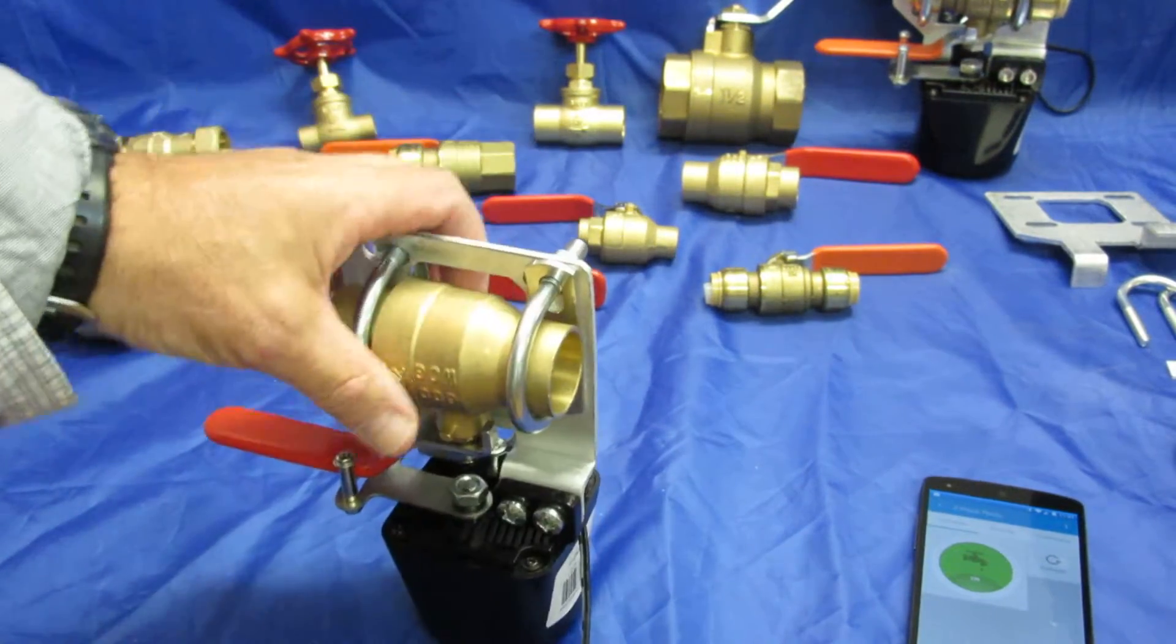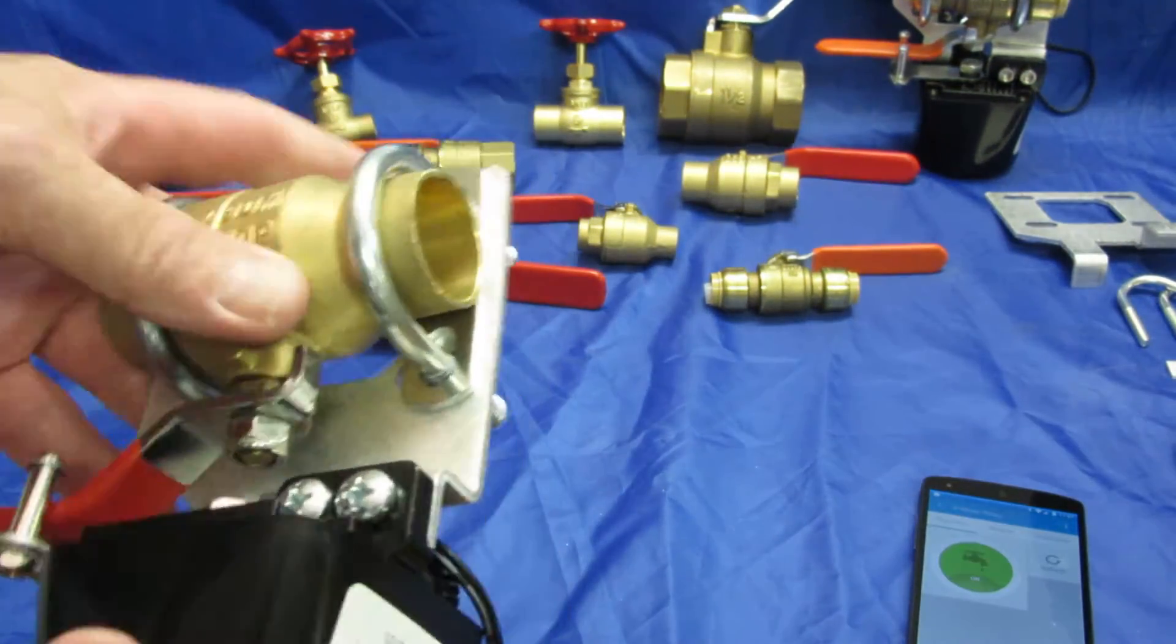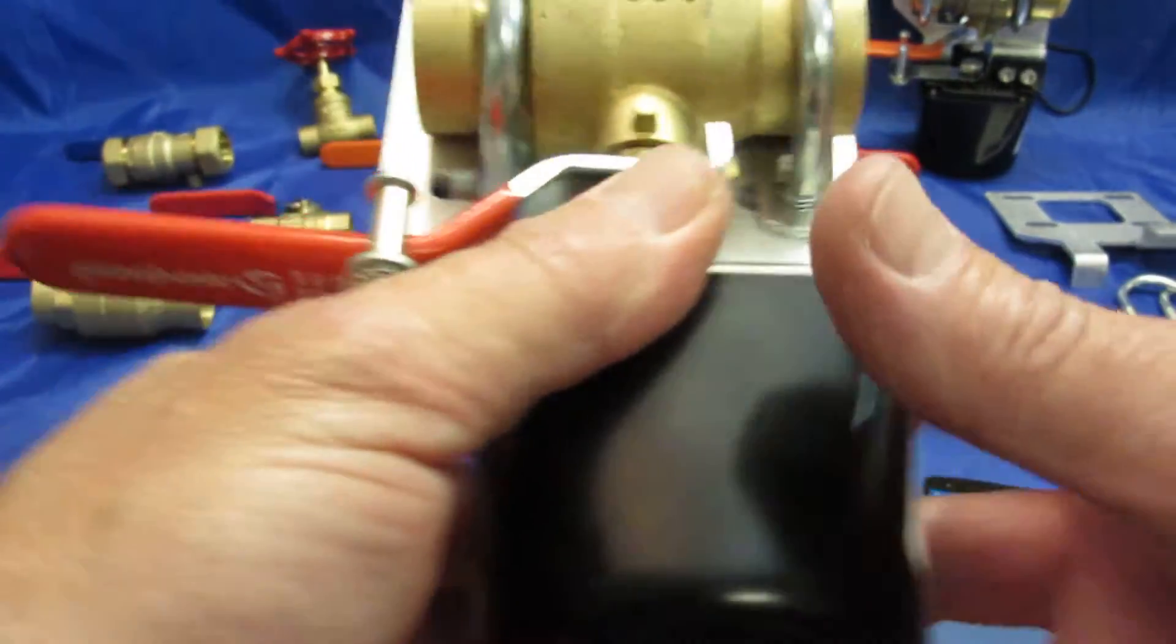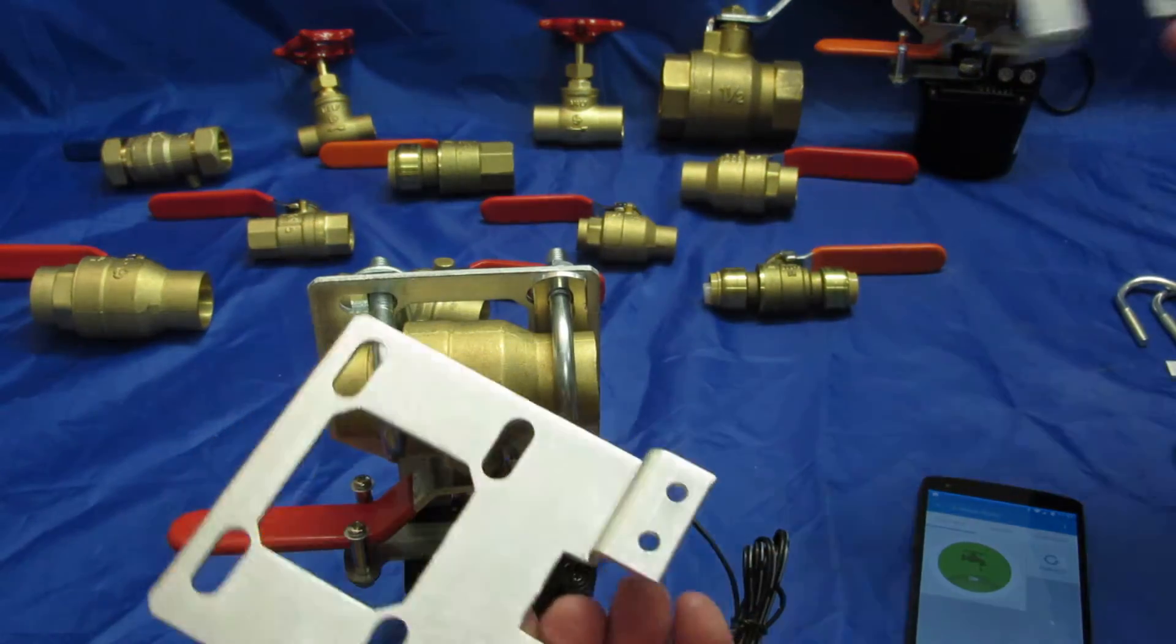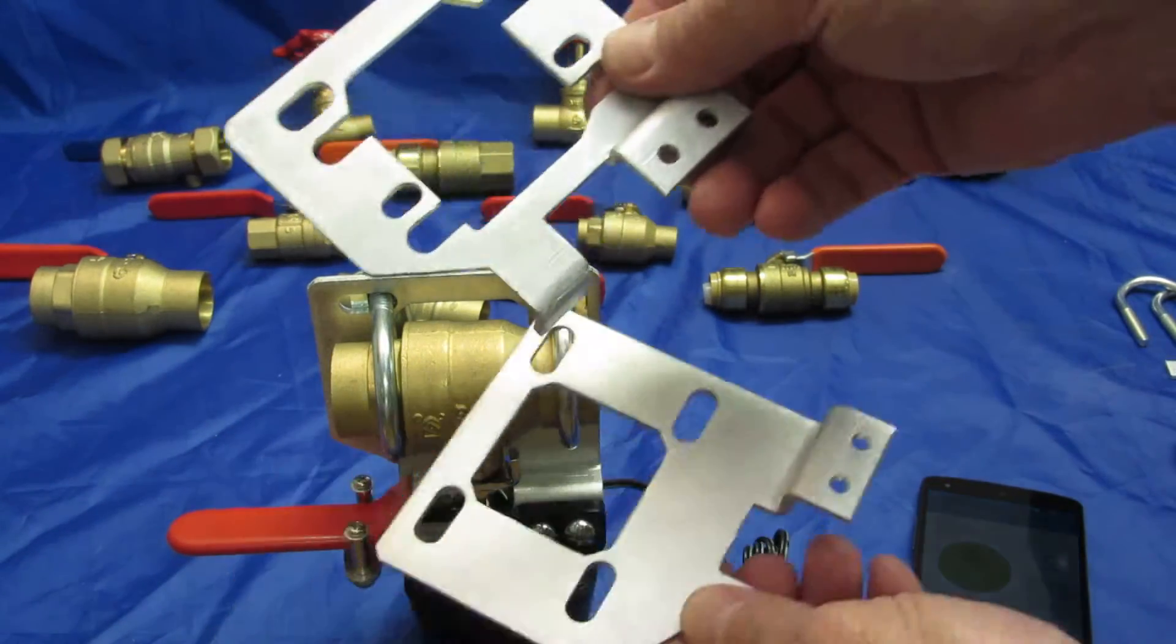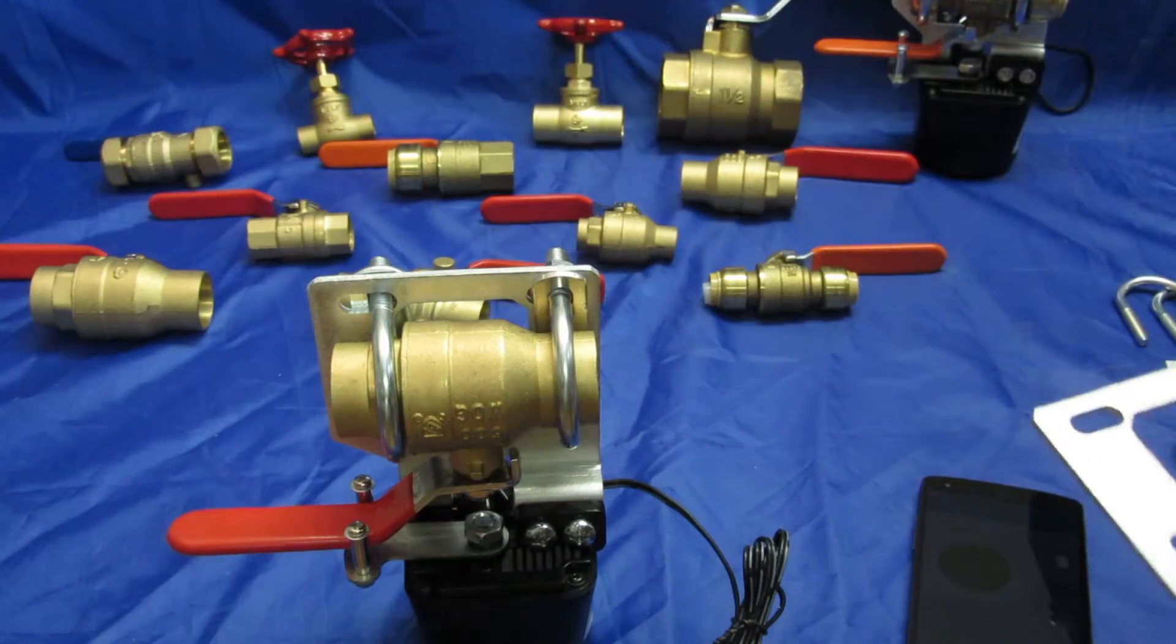I'm going to show you how to mount it on a one-inch valve. You use the larger mounting bracket. There are two mounting bracket types, one for one kit and one for the other. So in this case, you use the larger one.